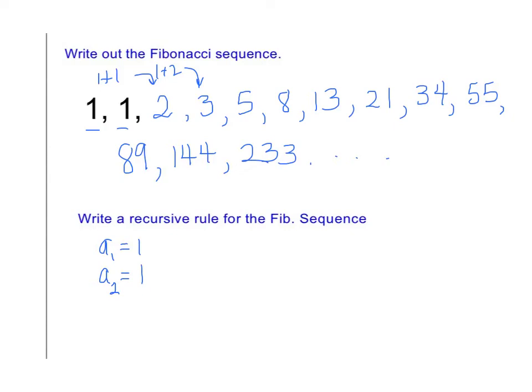And then what we do after that is we're going to add the previous terms together. So if I have to get the next term, this is a sub n is the next term, I'm going to take the two previous terms. So I'm going to do a sub n minus 1 plus a sub n minus 2. So that's one way to write the recursive form of the Fibonacci Sequence.